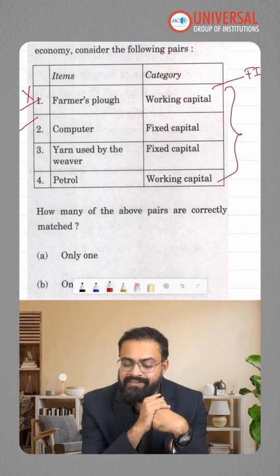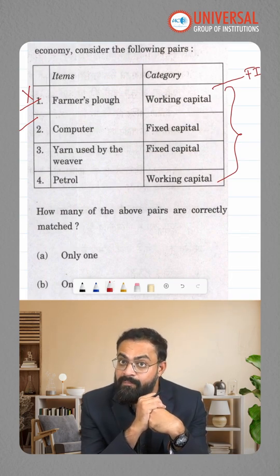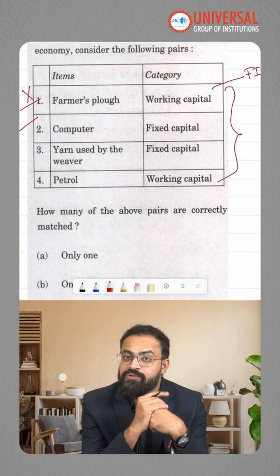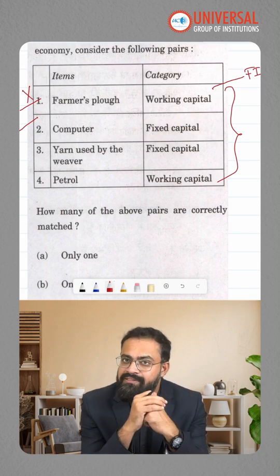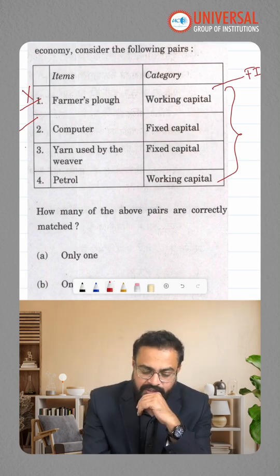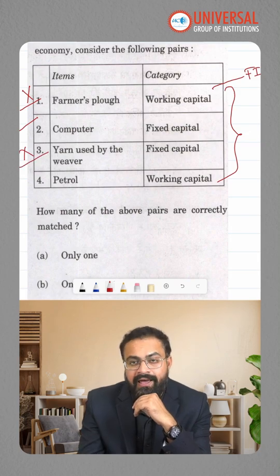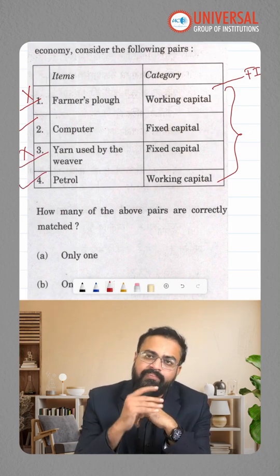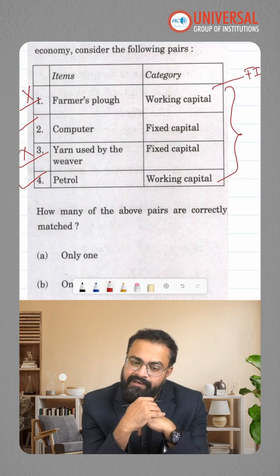Yarn used by the weaver is a fixed capital? No. It will serve as a raw material. So this is something whose production cycle is less than one year, so this is not rightly matched. Petrol is a working capital? Yes. If for the farmer, tractor is a fixed capital, so two of these are correctly matched.